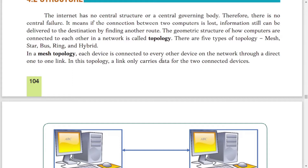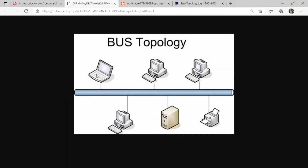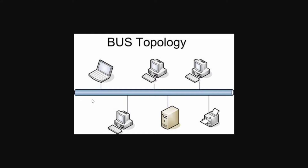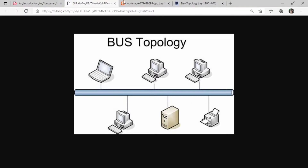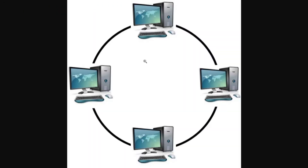There are different topologies to connect computers: mesh, star, bus, ring, and hybrid. In bus topology, there is a central cable through which all computers and electronic devices — like laptops, computers, printers, and servers — are connected. That cable is known as the backbone of the network. If something happens to the cable, the whole network may get disturbed.